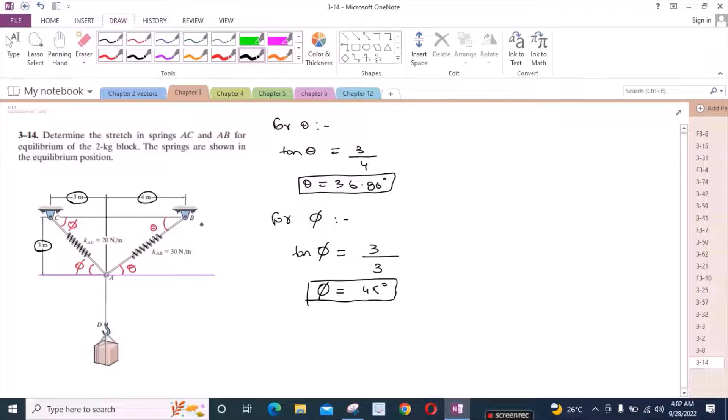Now let's draw a free body diagram of point A. So I have one force of the weight acting downwards, which is 2 into 9.81. I have one force which is acting at an angle of theta, the spring force FAB. And I have one more force of the spring force FAC at an angle of 45 degrees, phi FAC.